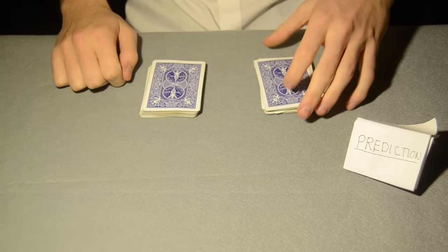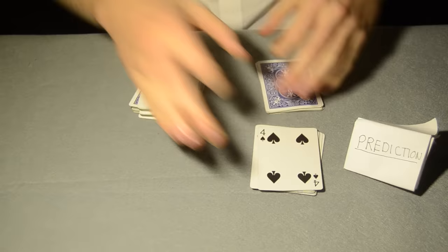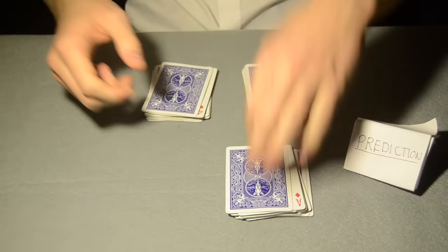Take half of your cards and flip the pile upside down and give them to the spectator. Instruct your spectator to do the same thing. Riffle shuffle your cards into their cards as shown. Make sure the spectator riffle shuffles the cards and doesn't turn over any extra cards when shuffling or the trick won't work.